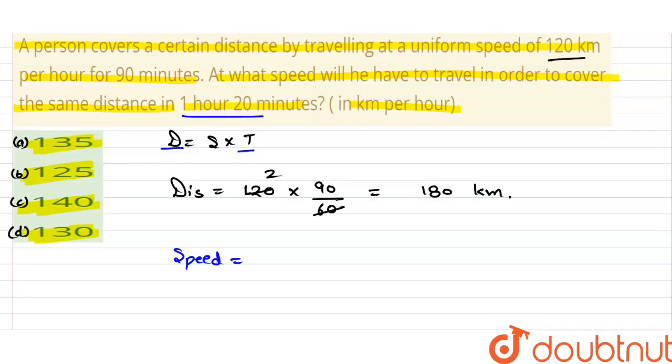Distance upon time. Distance is the same, that is 180. The time is 1 hour 20 minutes, which is 60 plus 20, that is 80. So divided by 80 minutes.